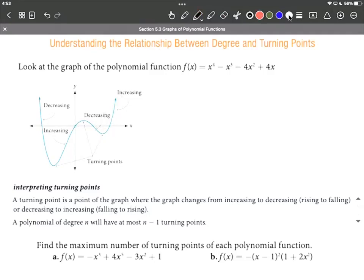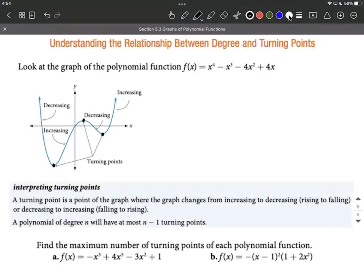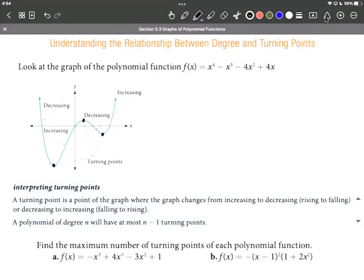What we want to note is when it changes from decreasing to increasing or increasing to decreasing, we get what we refer to as a turning point. Now we could classify these as maximums or minimums, local or relative maximums or minimums, but you'll notice that we have three turning points on our graph.